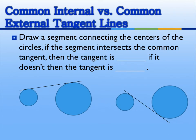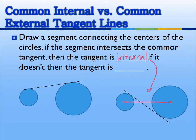Next we have common internal versus common external tangent lines. If we draw a segment connecting the centers of the circles, if the segment intersects the common tangent, then it is an internal tangent. We see that those two lines are intersecting, so it's an internal tangent. If it doesn't intersect — if we connect the centers and our tangent doesn't intersect with this line — then it is an external tangent.